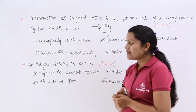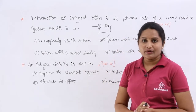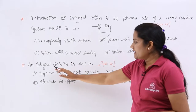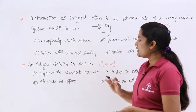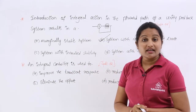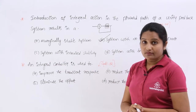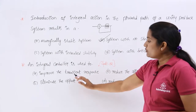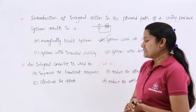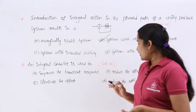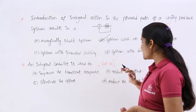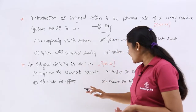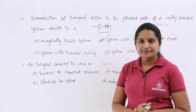Coming to another gate problem — Gate 2002: 'An integral controller is used to...' Options are: improve the transient response, reduce the offset, eliminate the offset, or reduce the settling time.